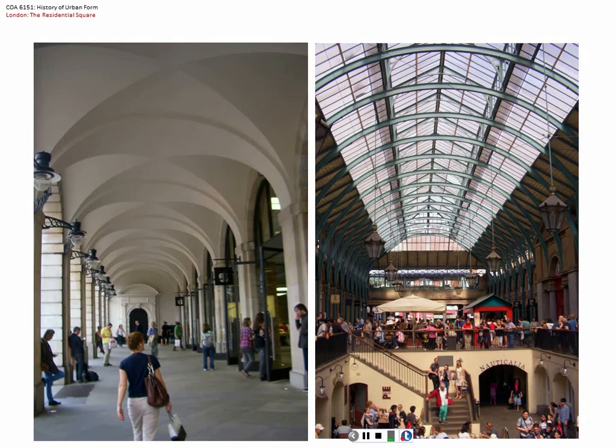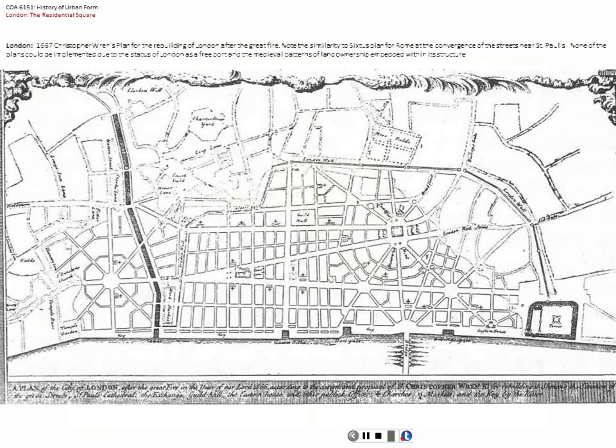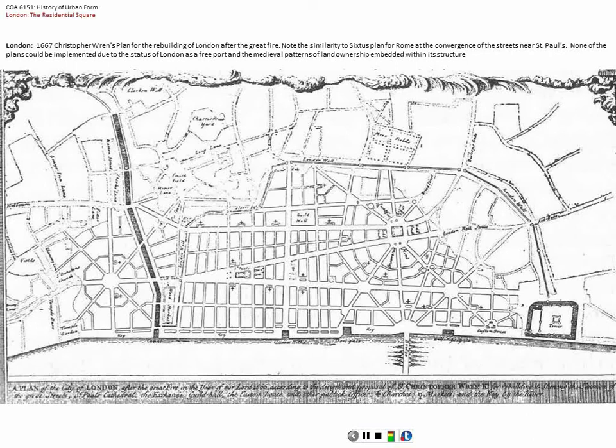In 1666, London was essentially still a medieval city — the West End is down here with Covent Garden, the Inns of Court, the Temple Gardens. Fire breaks out and it will burn the whole city to the ground. There was a lot of attention paid to how to build it back.